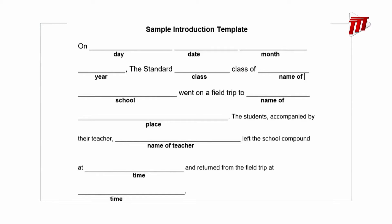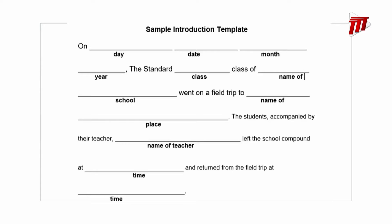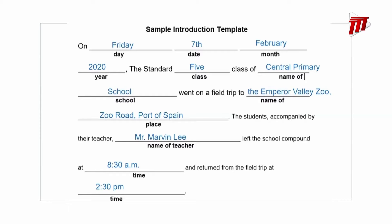Here I have a sample introduction template for writing a report on a field trip. This template can be used for any field trip that you go on during your time at school. In it, you have to include information such as the date — the day, date, month, year — the class you were in, the name of your school, the name of the place you visited. Additionally, you will include the name of your teacher, the time you left the school, and the time you returned to school. We have included the information on the field trip that some students of Central Primary School went on to the Emperor Valley Zoo.